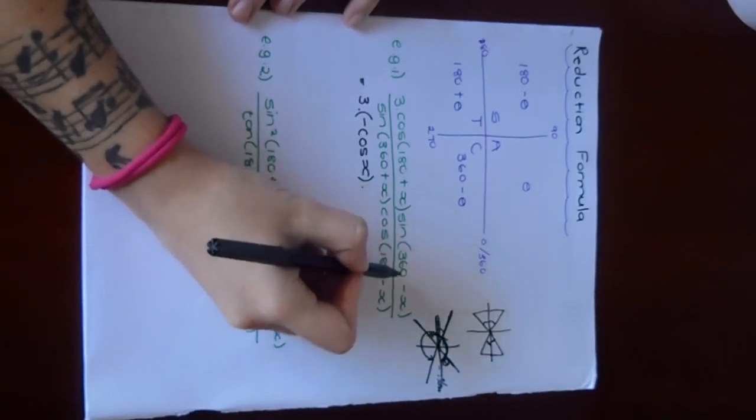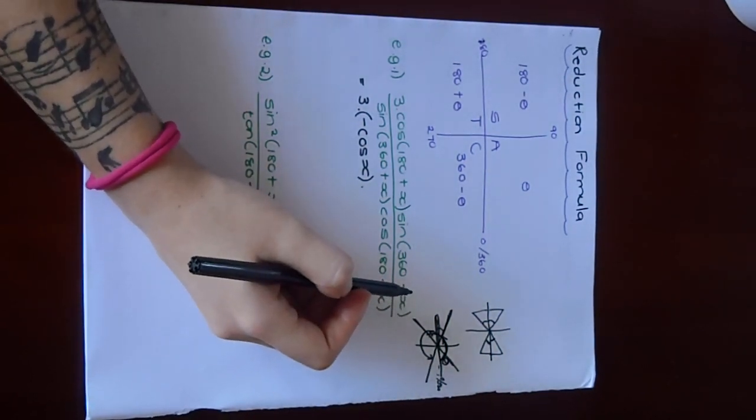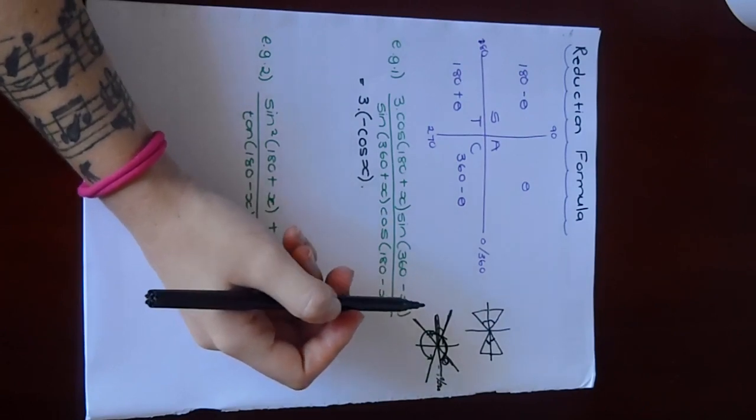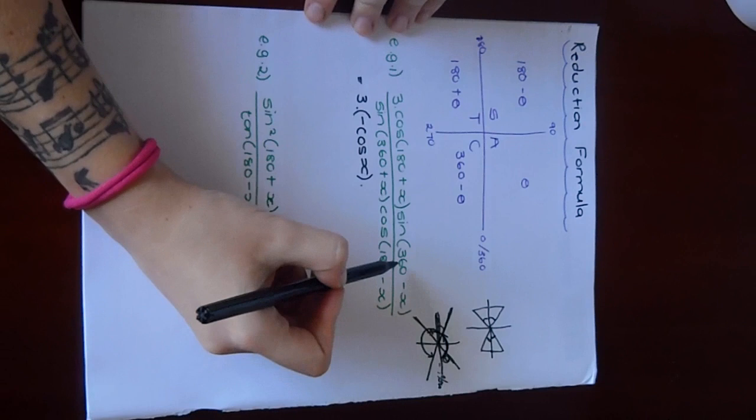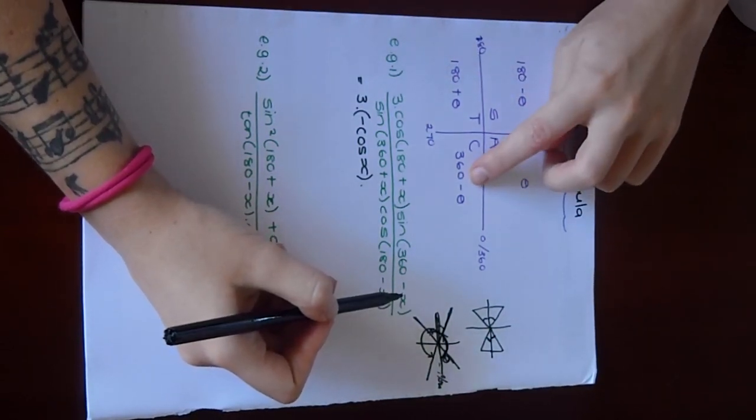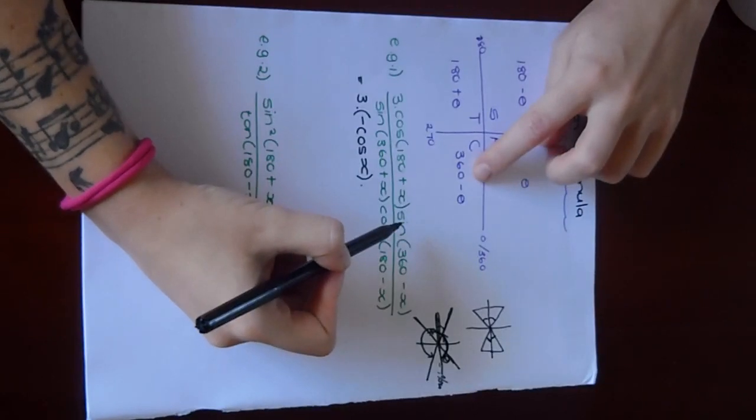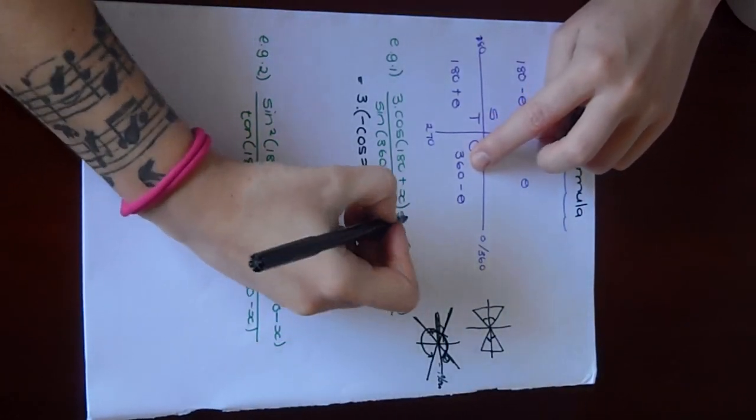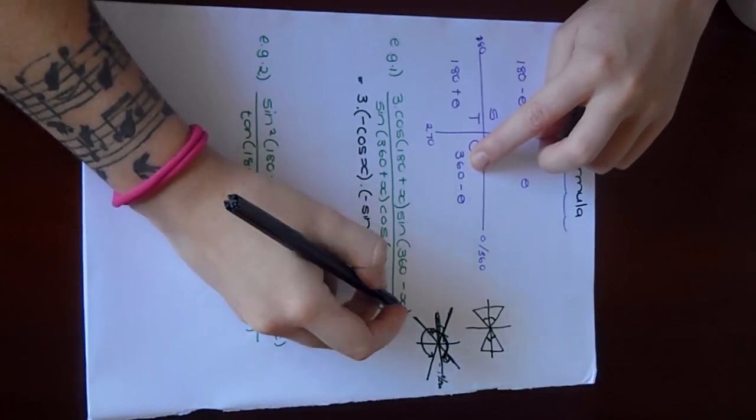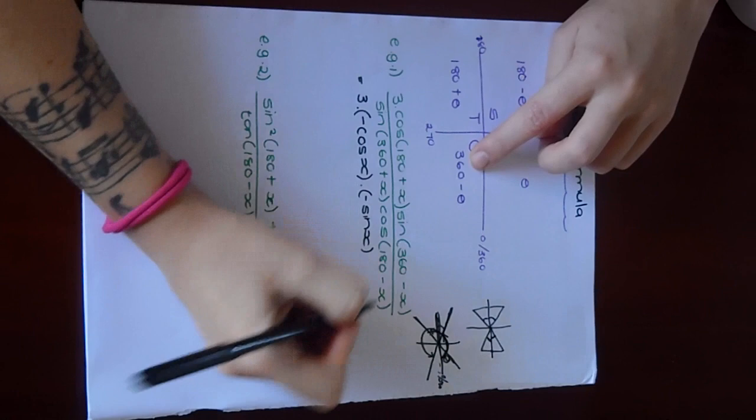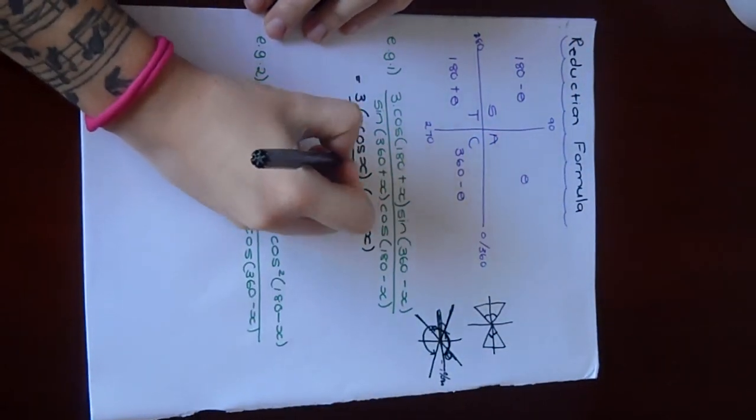Then, the next one is sine 360 minus X. By the way, X is just like another letter for the angle, so it's the same as using theta. 360 minus X is over here, in the fourth quadrant. What is sine in the fourth quadrant? Sine must be negative sine. And then, instead of 360 minus X, you're just going to make it an X. Basically, the number and the sign disappears.